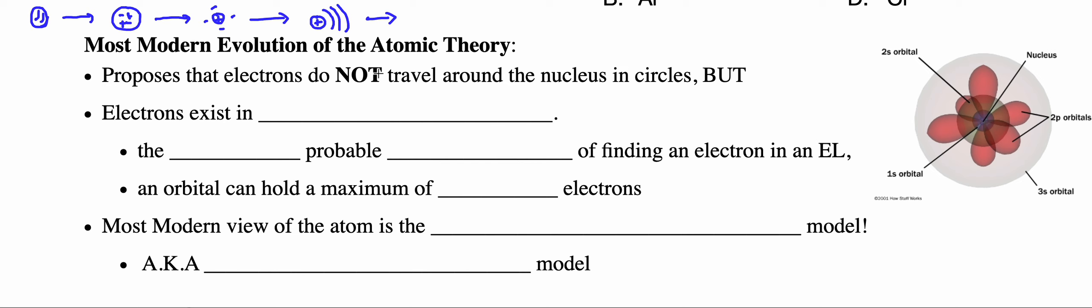The next development wasn't able to be made until quantum mechanics was being used and practiced. The most modern model proposes that electrons do not travel around the nucleus in those circles in those fixed paths, but electrons exist in what we call orbitals.